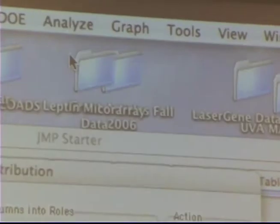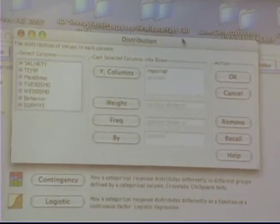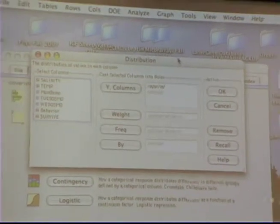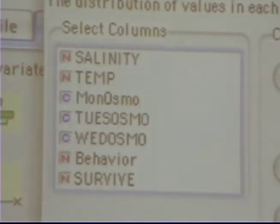So, if I do distribution, this is your standard JUMP window, which lists all your columns on the left. And then, it typically has which ones of these columns or data sets do you want to look at.